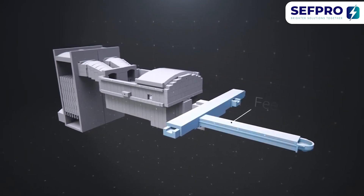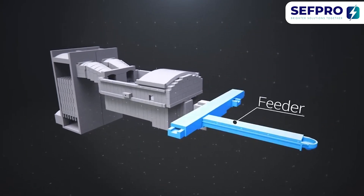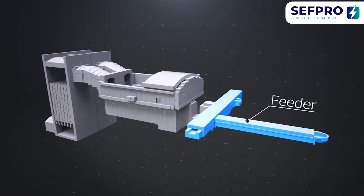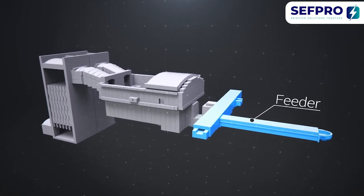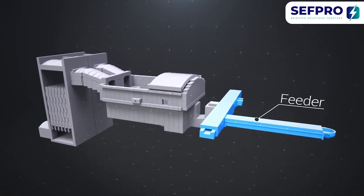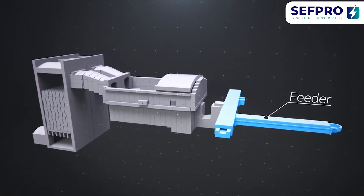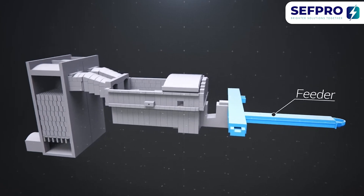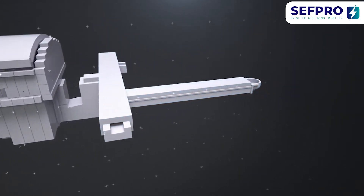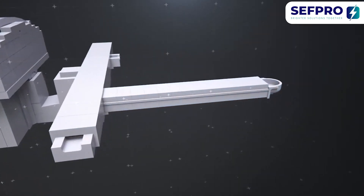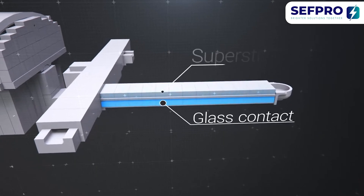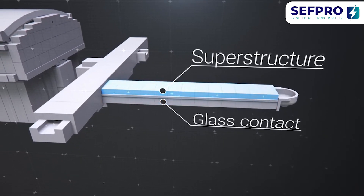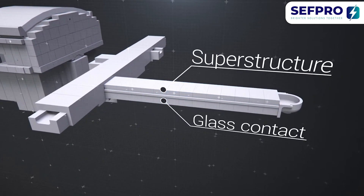The Feeder is the final section of the glass melting furnace, where the glass reaches thermal homogeneity prior to forming. This makes it a critical area to obtain optimal glass quality. Carefully selecting the right material for both glass contact and superstructure is crucial for the quality of the final product.